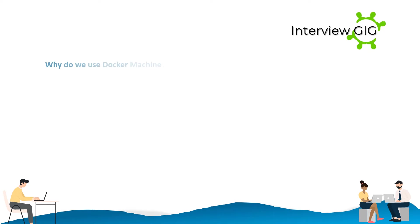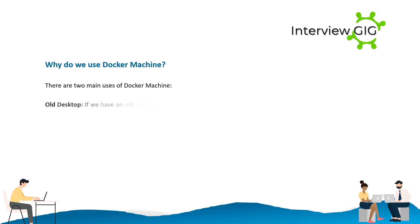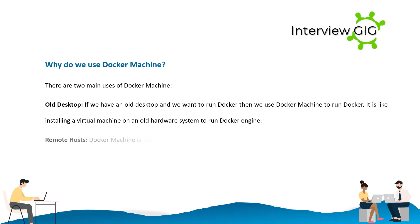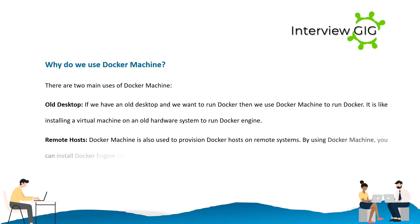Why do we use Docker Machine? There are two main uses of Docker Machine. Old desktop — if we have an old desktop and we want to run Docker, then we use Docker Machine to run Docker. It is like installing a virtual machine on an old hardware system to run Docker Engine. Remote hosts — Docker Machine is also used to provision Docker hosts on remote systems. By using Docker Machine, you can install Docker Engine on remote hosts and configure clients on them.